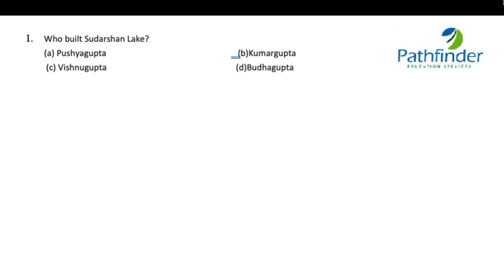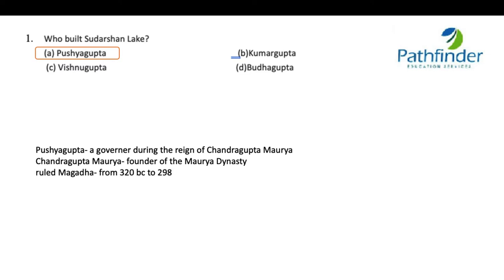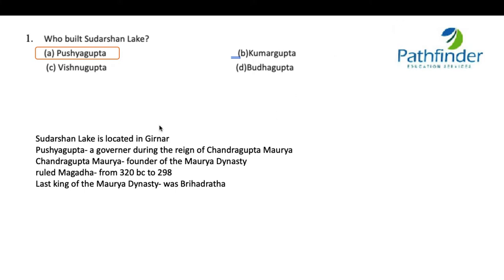Here is the first question: who built the Sudarshan Lake? The correct answer is Pushya Gupta. Pushya Gupta was a governor during the period of Chandragupta Maurya. Chandragupta Maurya was the founder of the Maurya dynasty and ruled Magadha from 320 BC to 298 BC. The last Maurya king was Brihadratha, who was assassinated, after which the Shunga dynasty took over. Sudarshan Lake is located in Girnar.